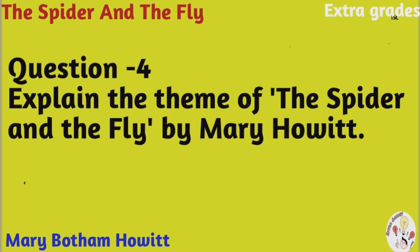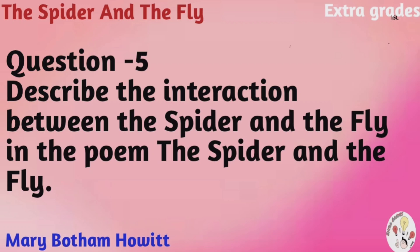Question number five: describe the interaction between the spider and the fly. The spider and the fly has the qualities of a fable — it tells a tale which has a moral. The poem has been written to caution children about the dangers of vanity and of being susceptible to flattery. It can also be interpreted as a warning to women to be aware of men who exploit and manipulate them through flattery.